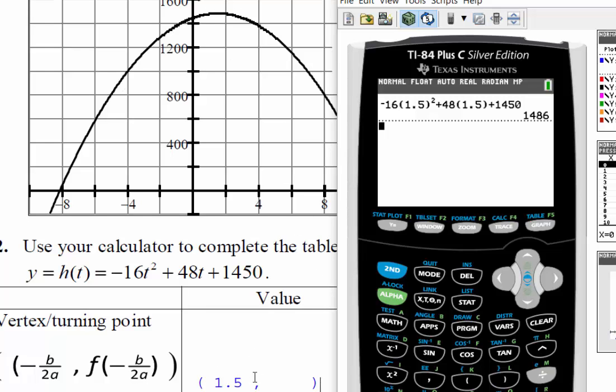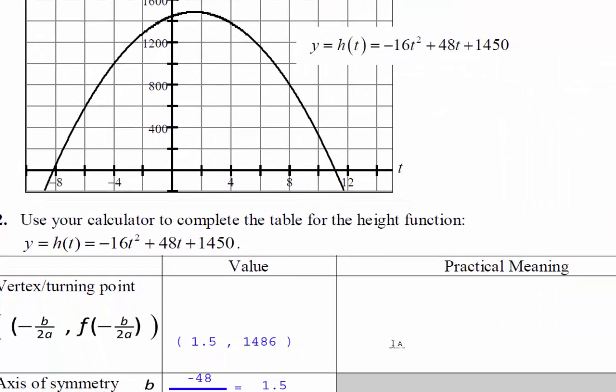So let's write that into our box here. Okay, so the ordered pair is 1.5 comma 1,486. And just remember, the x coordinate or the horizontal coordinate, in this case is t, so that's time. So it takes 1.5 seconds for the ball to be 1,486 feet in the air.